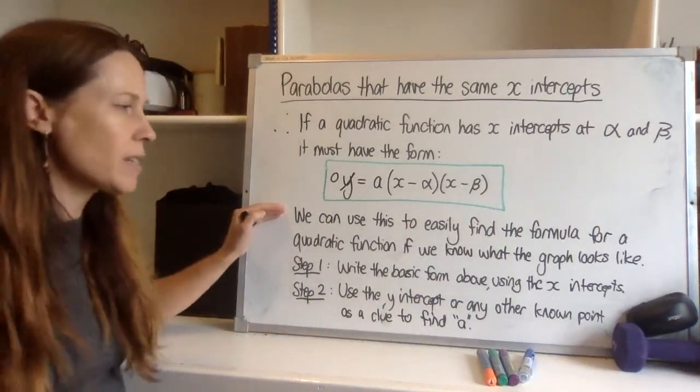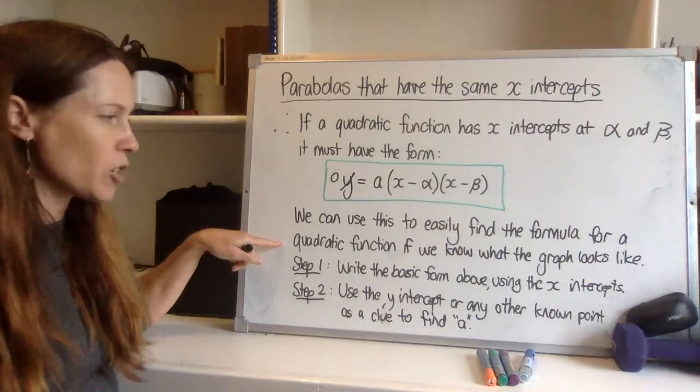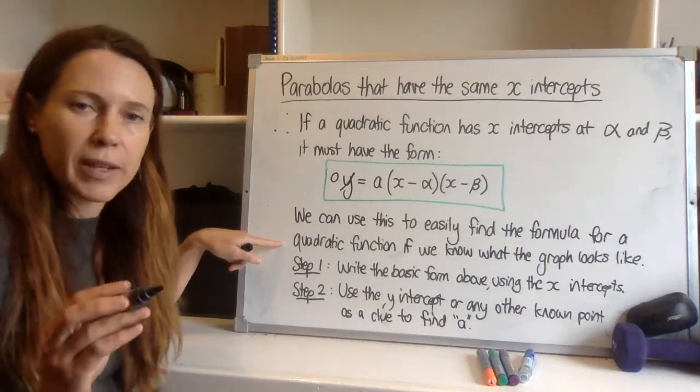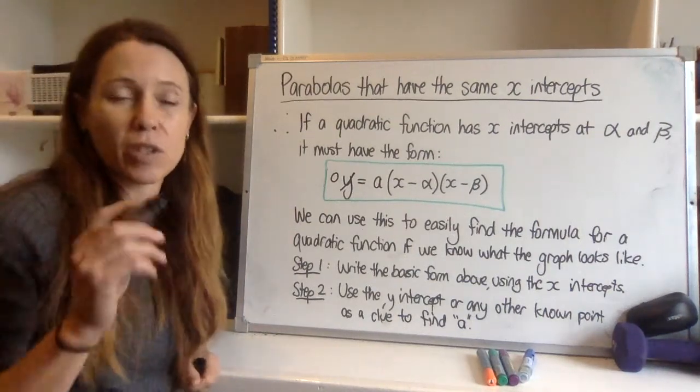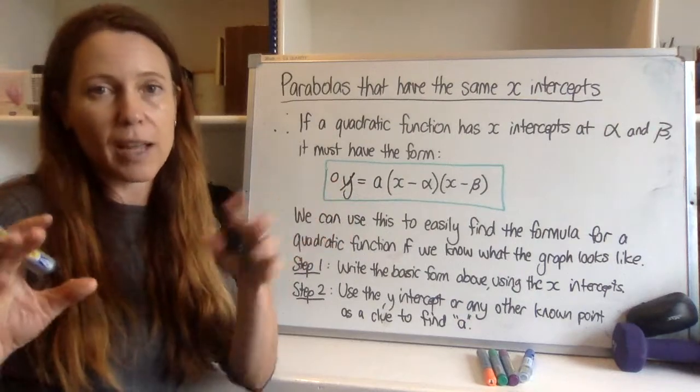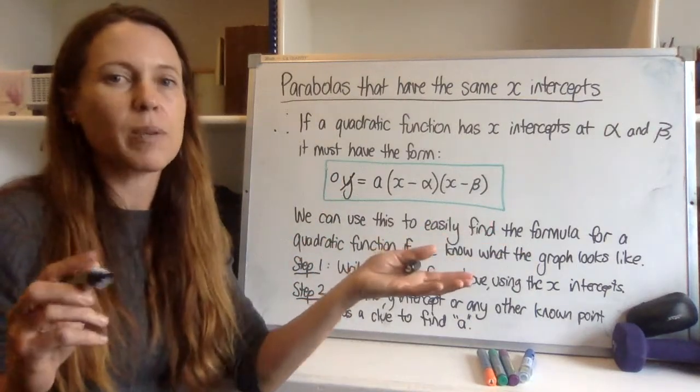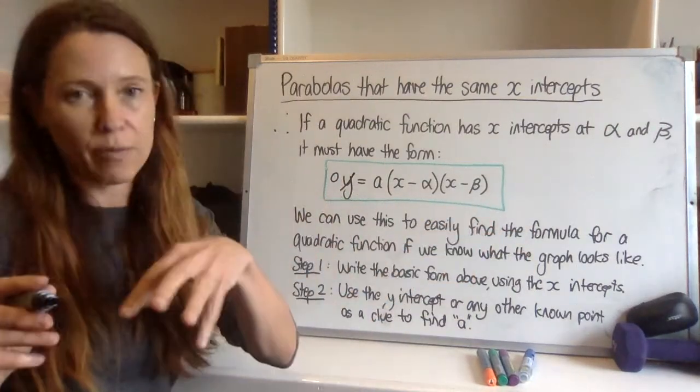So we can use this to easily find the formula for a quadratic function when we know what the graph looks like. So consider what that means. So far we've looked at the function and we've graphed it, now we're going to be able to look at a graph and find the formula for it.